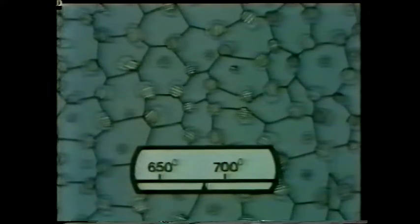As the temperature falls to about 720 degrees centigrade, the old type of grains begin to reappear. These grow until they meet their neighbours. This structure appears to be very similar to the one we started with. But if we compare the two, we find we've reduced the size of the grains and made them more uniform.